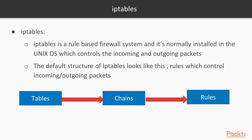Firewalls provide basic security to the server. One of the major features of the firewall is to block unwanted traffic. There are different types of firewalls supported by the UNIX operating system based on the type of UNIX family. For example, IPTables. IPTables is a rule-based firewall system, normally installed in UNIX OS, which controls the incoming and outgoing packets. The default structure of IPTables looks like: IPTables, IPTables chain, and IPTables rules — rules which control incoming and outgoing packets.